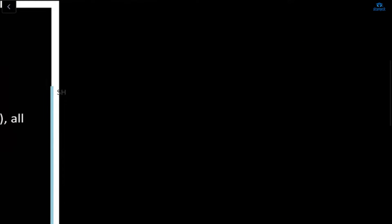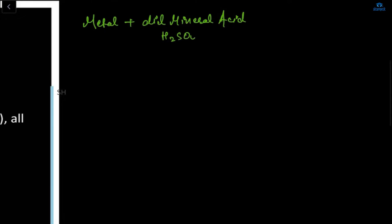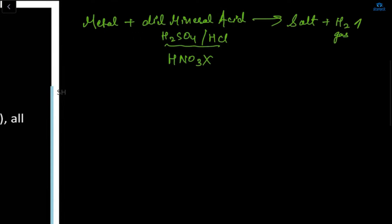The reaction of metal with acid: metal plus dilute mineral acid gives salt plus H₂ gas. In dilute mineral acid we take two things — H₂SO₄ or HCl. We will not take HNO₃ as a dilute mineral acid; only these two are valid.